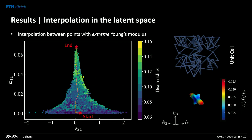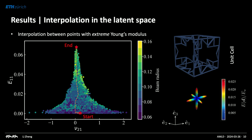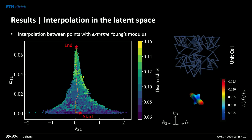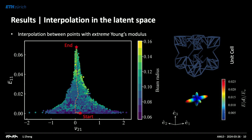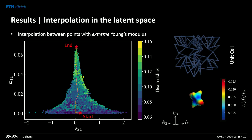Another nice thing you can do with this continuous latent representation is interpolate between any two points in the training space. For example, here I took two structures with extreme Young's modulus — the one with the lowest and the one with the highest. By interpolating between the two, you get a smooth transition walking through the latent space, and the model comes up with structures all along the way that bring you from the lowest value to the highest.